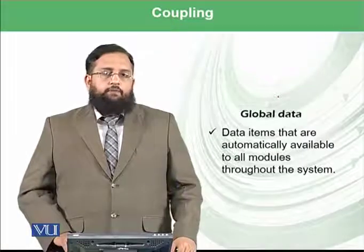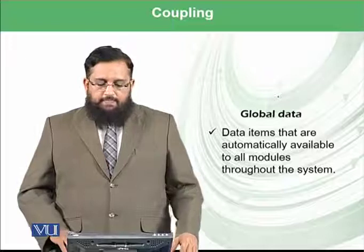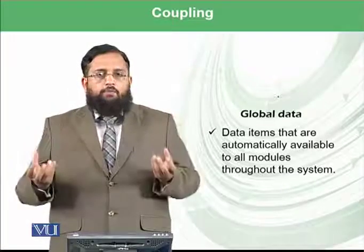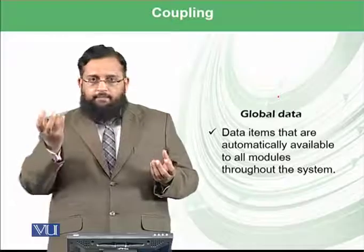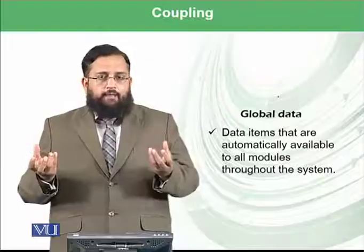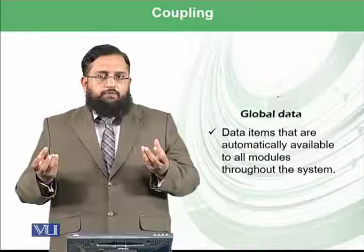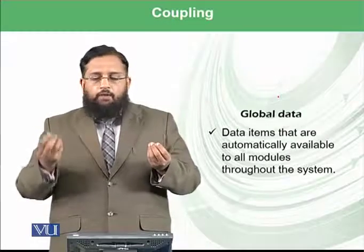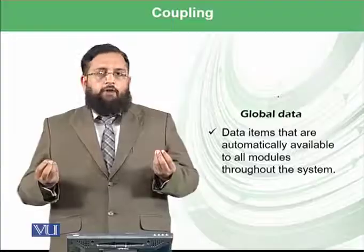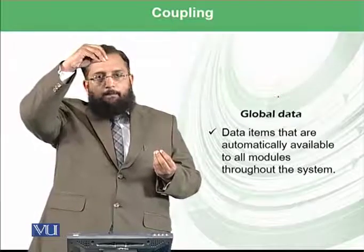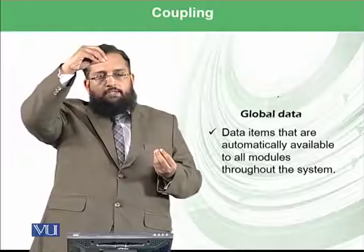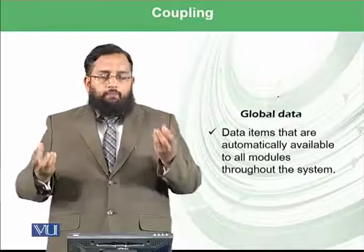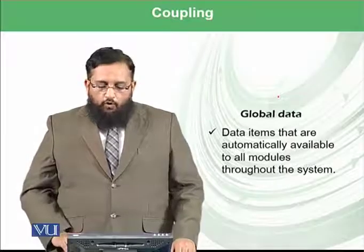The second method involves global data. This means data items are automatically available to all modules. For example, if there is a module A and a module B, the data element X processed by both is not the property of any particular module. Instead, it resides at a certain place accessible to both modules. This is called global data.